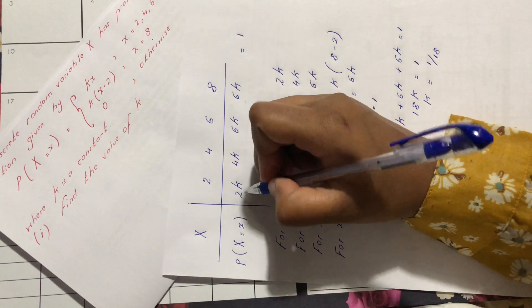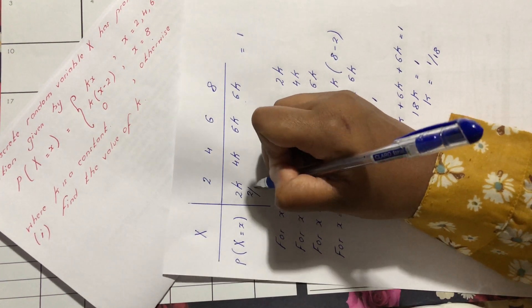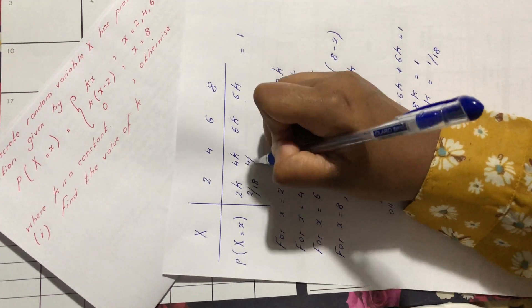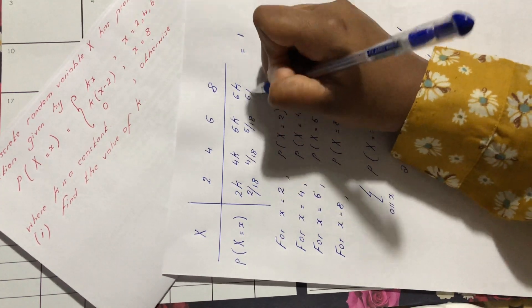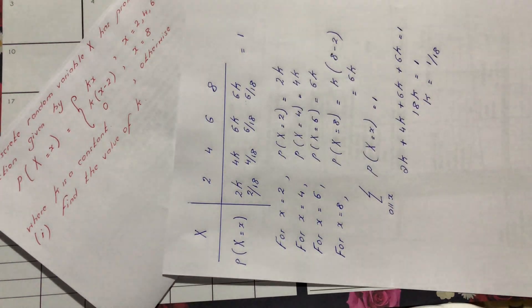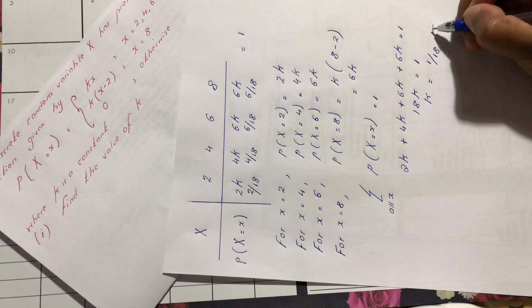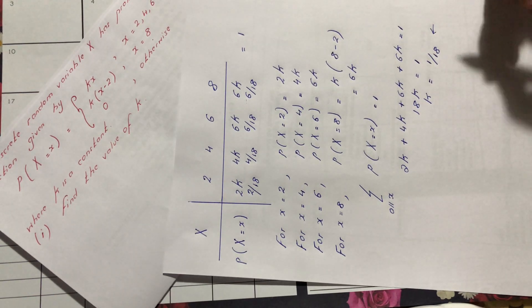Next, we complete the table by replacing k. So we have 2 over 18, 4 over 18, 6 over 18, 6 over 18. So there we have it, the value of k is equal to 1 over 18.